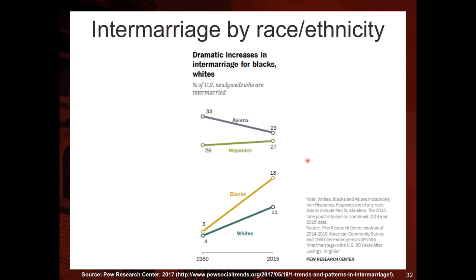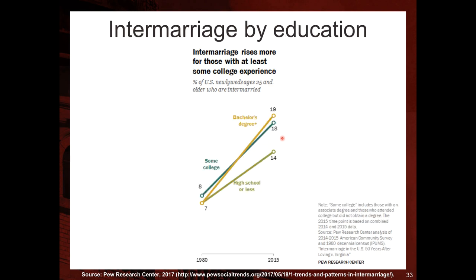Intermarriage rates also vary by education — intermarriage rises more for those with at least some college experience. People with a bachelor's degree have the highest rates of interracial marriage — increasing from 7% in 1980 to 19% in 2015. Those with some college are below 18% in 2015, and those with high school or less reached only 14% in 2015.